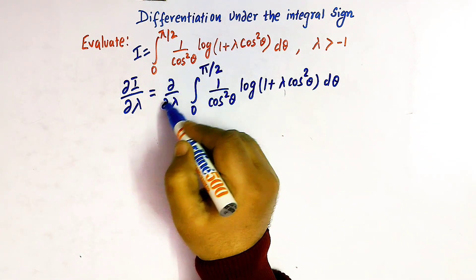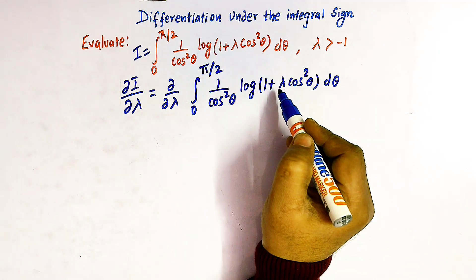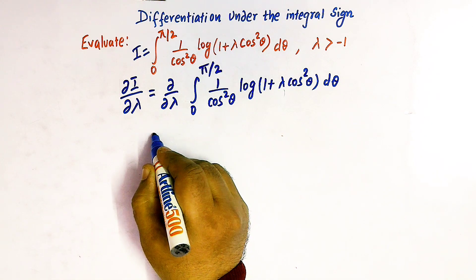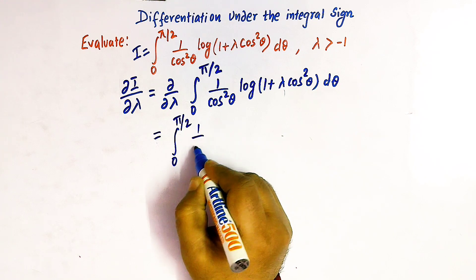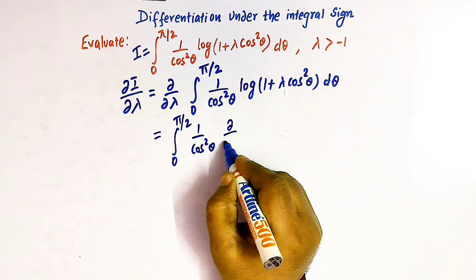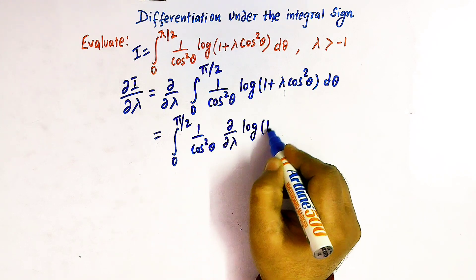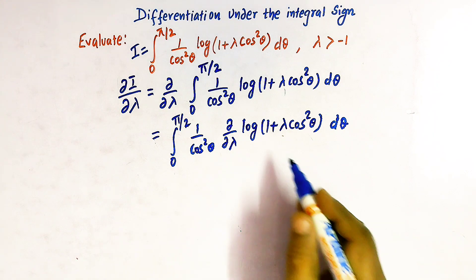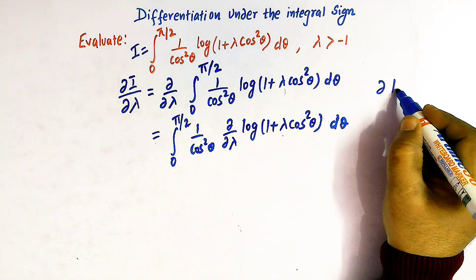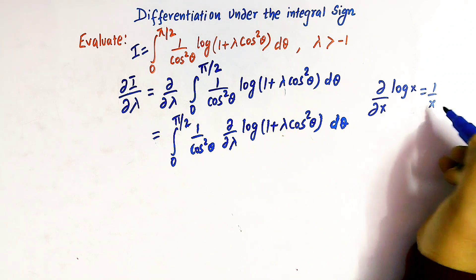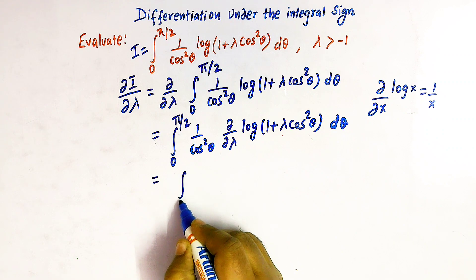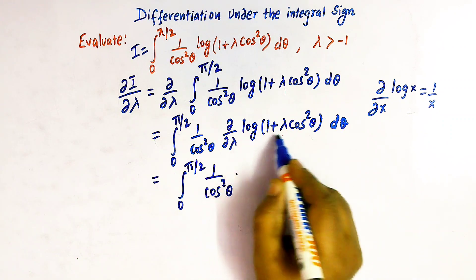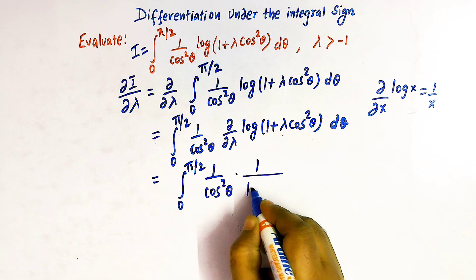So we can now write ∂i/∂λ = ∂/∂λ of the integral from 0 to π/2 of (1/cos²θ)·log(1 + λcos²θ) dθ. Now we'll take this operator ∂/∂λ inside the integral sign — this is the concept behind differentiation under the integral sign. So we differentiate log(1 + λcos²θ) with respect to λ; the derivative of log(x) with respect to x is 1/x.